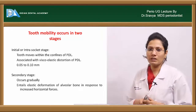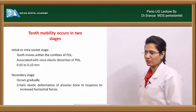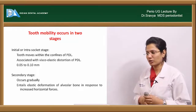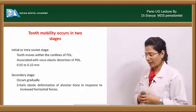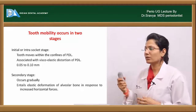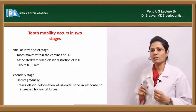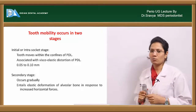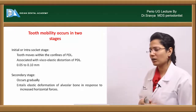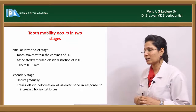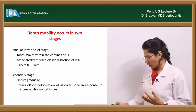Tooth mobility can occur in two stages. In the initial or intrasocket stage, the tooth moves within the socket within the confinement of the periodontal ligament. This is associated with viscoelastic distortion of the PDL and ranges from 0.05 mm to about 0.10 mm. In the secondary stage, it is a gradual process entailing elastic deformation of the alveolar bone in response to increased horizontal forces.